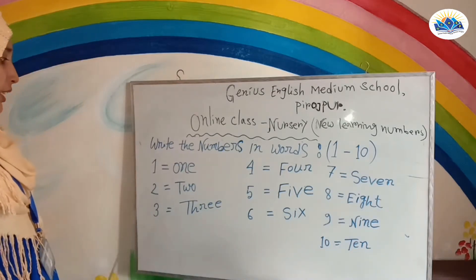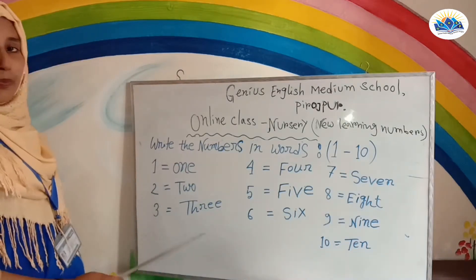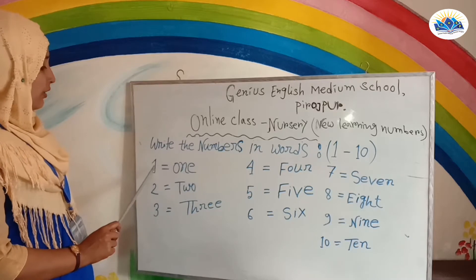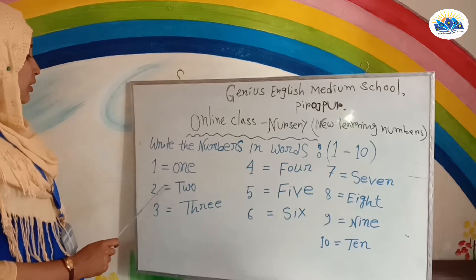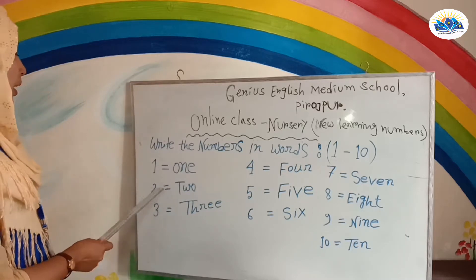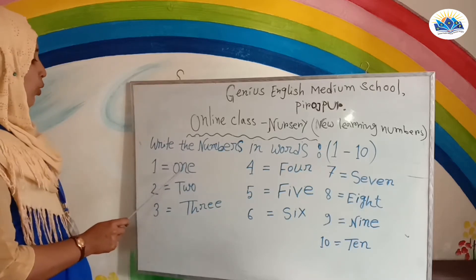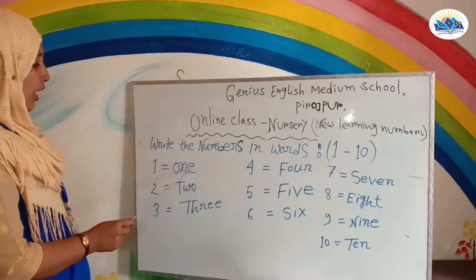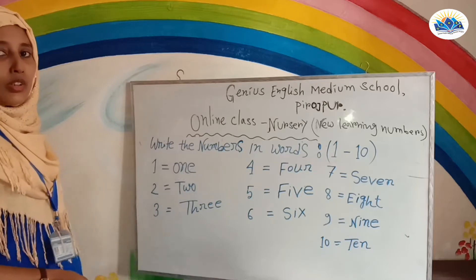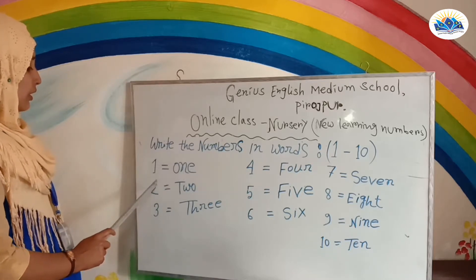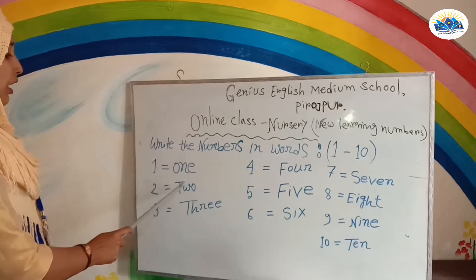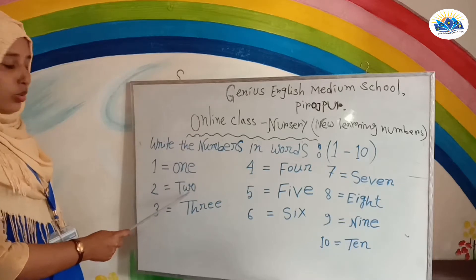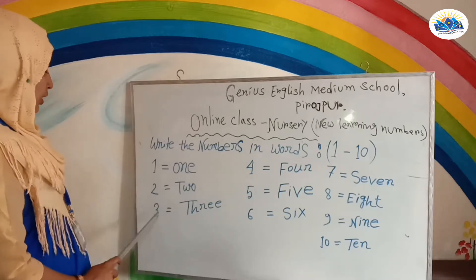Okay, children. Number one: O-N-E. One. Number two: T-W-O. Two.